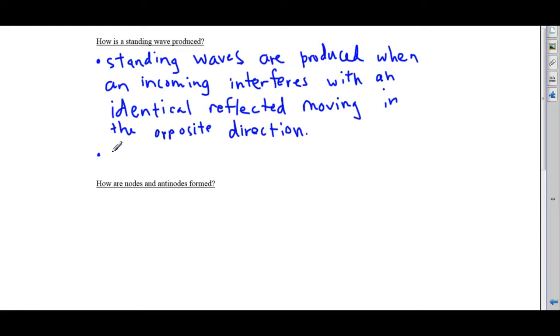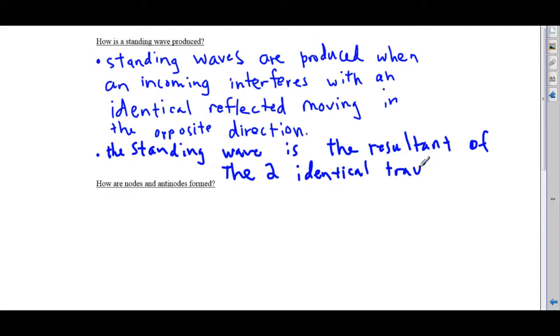The standing wave is the resultant of two traveling waves. A standing wave, or we could say the standing wave, is the resultant of the two identical traveling waves. They're identical, except they're moving in opposite directions.